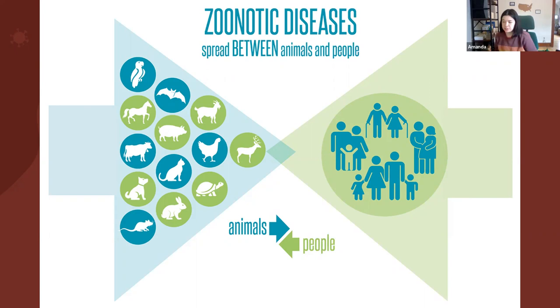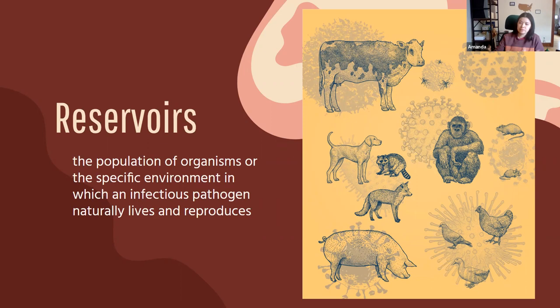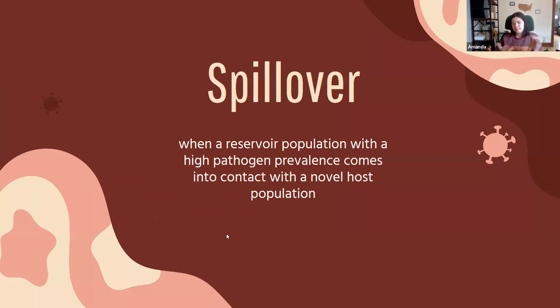The flu is a zoonotic disease — an infectious disease spread between animals and people — and it starts with a reservoir. A reservoir is a population of organisms or a specific environment in which the infectious pathogen naturally lives and reproduces. It typically doesn't cause severe symptoms in the reservoir population, and rarely even causes clear signs of infection. From the reservoir, we can get spillover when that reservoir population comes into contact with a novel host — one that has never seen this virus before, what we call naive.